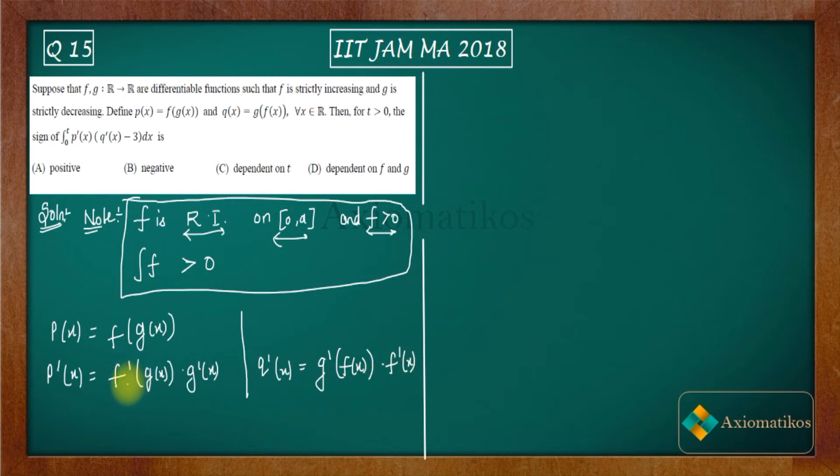Now what is given to you? It's given to you that f is strictly increasing and g is strictly decreasing. Now since f is strictly increasing, that means this thing is positive. But g is strictly decreasing, that means this thing is negative.